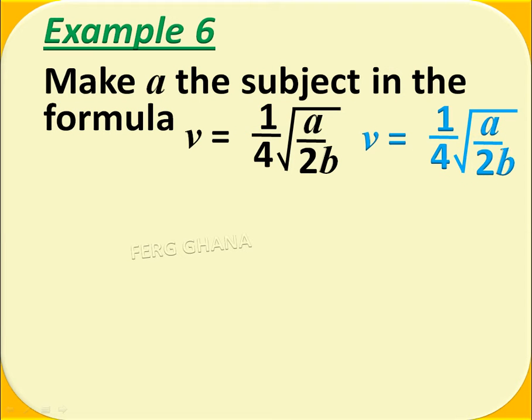V equals 1/4 of the square root of a over 2b. Here we have to divide both sides by 1/4, or multiply both sides by 4. And that gives us 4v equals the square root of a over 2b.